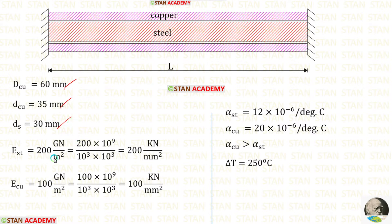The Young's modulus are given in giga newton per meter square. We can convert them into kilo newton per millimeter square. The alpha values for steel and copper are given. The alpha value for copper is higher than the alpha value for steel. The change in temperature delta T is given as 250 degrees Celsius.